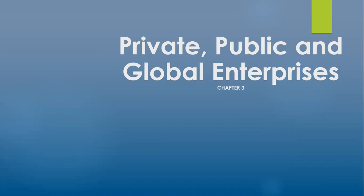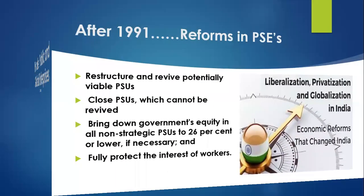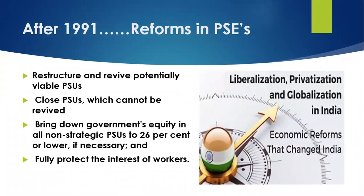The major changes which happened in 1991 — let us check those changes. These are the reforms which were brought in, and the main basis of these reforms were liberalization, privatization and globalization. You must have covered this in economics as well, since business and economics are interrelated. Let us see how these policies affected the business scenario.